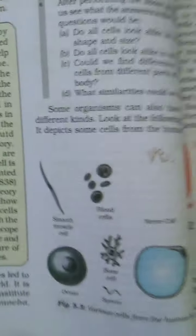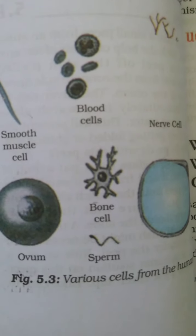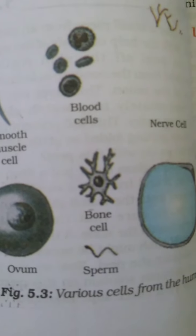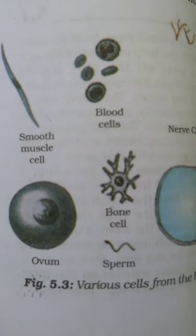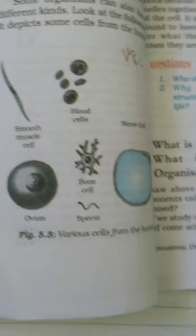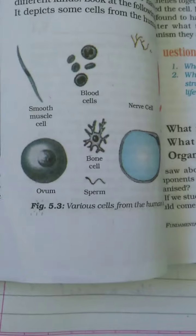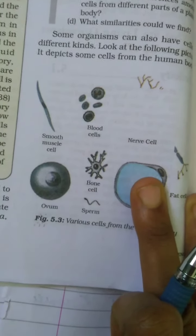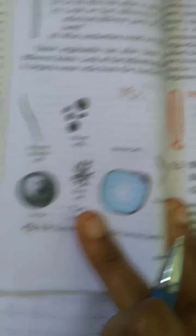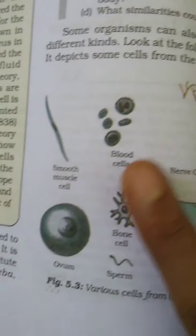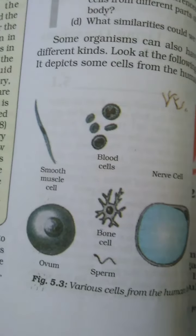In the last class we saw the various cells in the human body. We learned that organisms which have only one cell are known as unicellular organisms, and organisms which have many cells are known as multicellular organisms. Humans have millions and trillions of cells and different kinds of cells — as you can see in the picture, there are blood cells, smooth muscle cells, bone cells, etc.